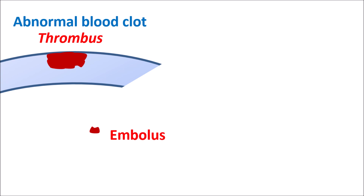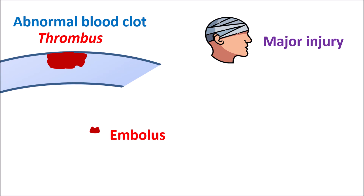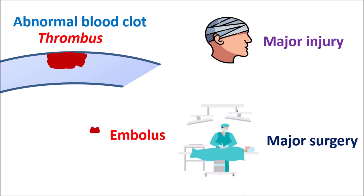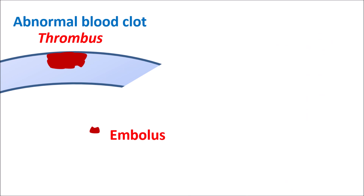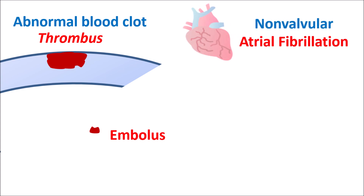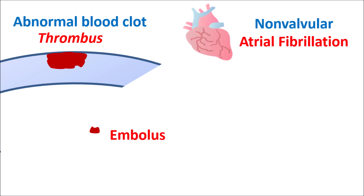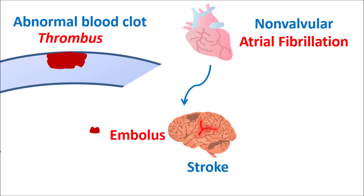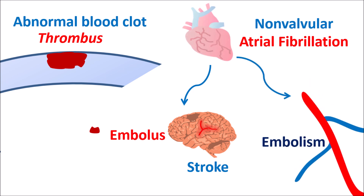Such events can occur during major injury where clotting processes are more activated, and if risk factors are associated, a thrombus can form. During any surgery there is also a chance of abnormal clot formation. Apart from these, cardiovascular conditions like non-valvular atrial fibrillation can increase the risk of thrombus formation, increasing the risk of stroke via embolism within the CNS as well as pulmonary embolism. These conditions are very fatal and should be immediately treated.